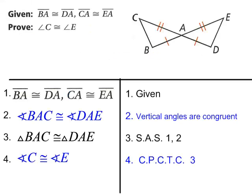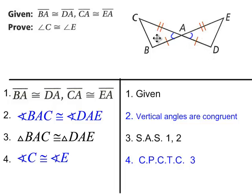We're going to talk about this proof. If you're given two triangles, and you're given that AB is congruent to AD, and AC is congruent to AE, then we can pick up vertical angles to say that angle BAC is congruent to angle DAE. So these two triangles are congruent by Side-Angle-Side.